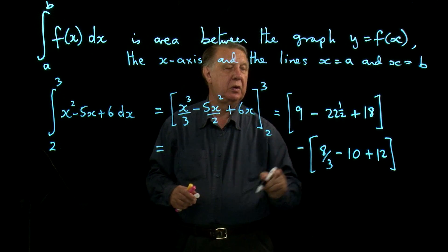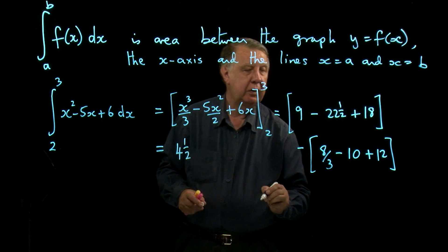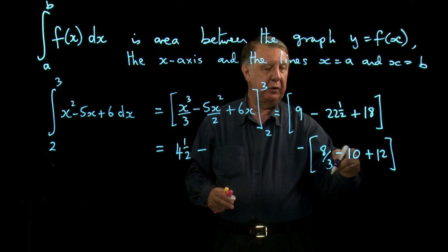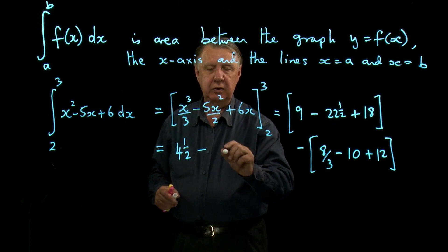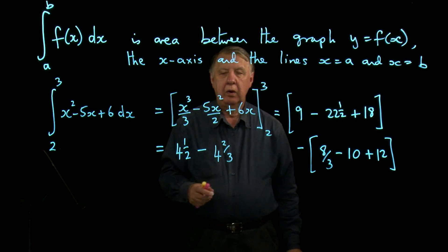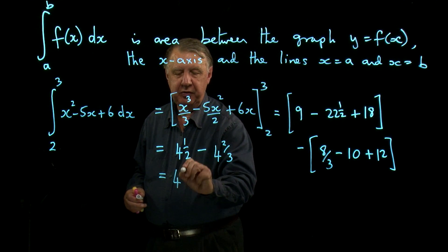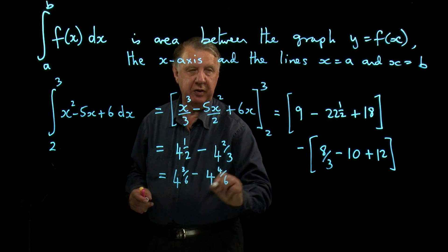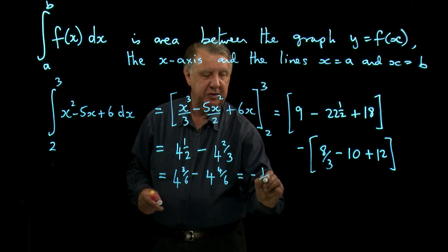18 and 9 is 27, take away 22 and a half is 4 and a half. And then this one here, 12 take away 10 is 2, and 8 over 3 is 2 and 2 thirds. So 4 and 2 thirds. Depending on how good you are at fractions, that's 4 and 3 sixths take away 4 and 4 sixths. Oh that looks a problem doesn't it - it's a minus 1/6 that's come out too.